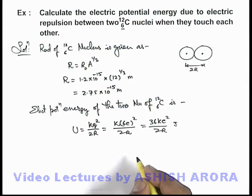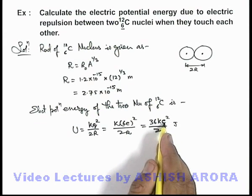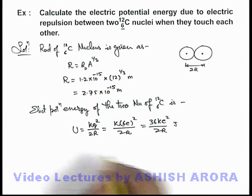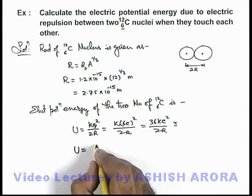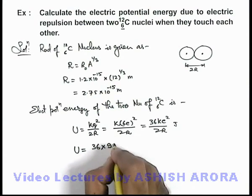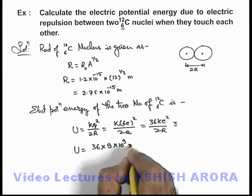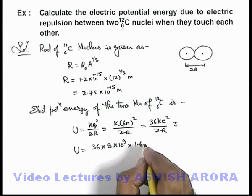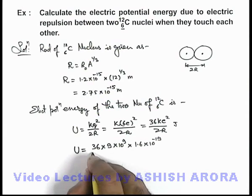This is calculated in joules. So if we divide it by e, it will give us the energy in electron volts. On simplifying and substituting the values we can see we are getting 36 × the value of k is 9 × 10⁹ multiplied by, rather than e² we are taking only e, which is 1.6 × 10⁻¹⁹.